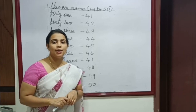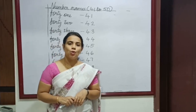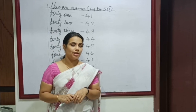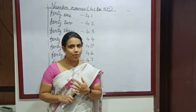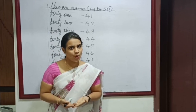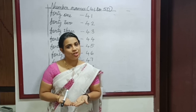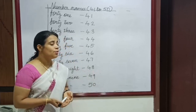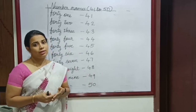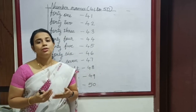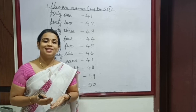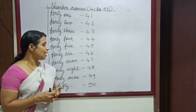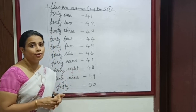Please spell 40: F, O, R, G, Y — 40. F, O, R, G, Y — 40. 41, 42, 43, 44, 45, 46, 47, 48, 49, 50.